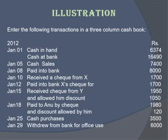The next is cash purchase — during a purchase we always pay cash, so the amount of this transaction is recorded on the credit side in the cash column. The last transaction is again a contra entry; you will record the amount of 6,000 on both sides of the cash book.